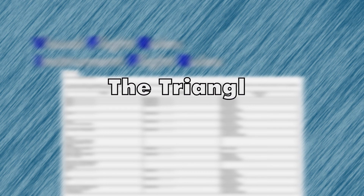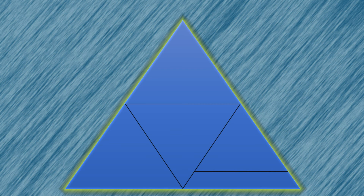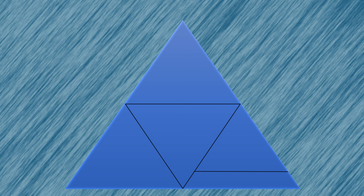We're going to call it the awesome triangle of weather minimums. I've taught this method a whole bunch of times, and if you can draw this out, you basically know all your weather minimums. So grab a pen, pencil, paper — whatever you write with — and draw this out as we go. It will definitely help you out, trust me.